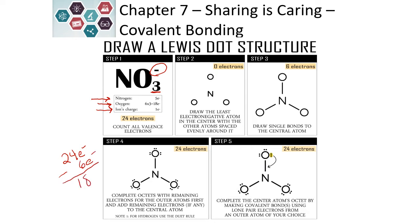We have 18 electrons left to use. We start filling the outside elements with lone pairs until they each have 8 electrons, including the bond — completing the octets for those outer elements. On our nitrate example, there are 6 electrons added to each of the oxygens for a total of 18 electrons used. We have no electrons left.